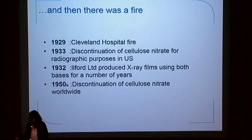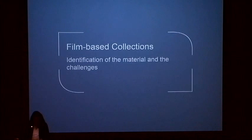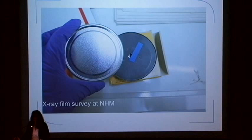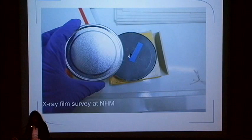Now, at the Natural History Museum we have a small collection of negatives and photographs, but we have a much larger collection of x-ray films. The x-ray film collection exists because we also have an x-ray lab which was set up in the mid-1930s, and it has been in use ever since by curators and researchers who would like to study the skeletons of specimens through x-ray films. This means it was expected that our collection would contain cellulose nitrate x-ray films.